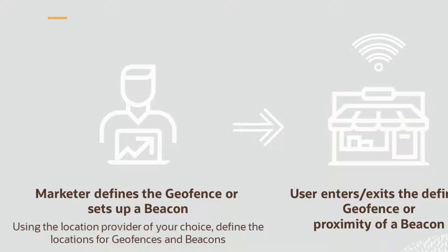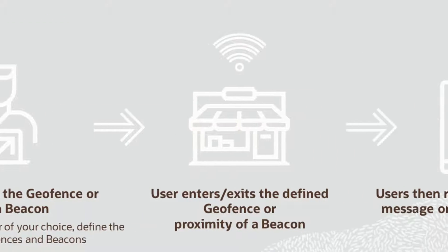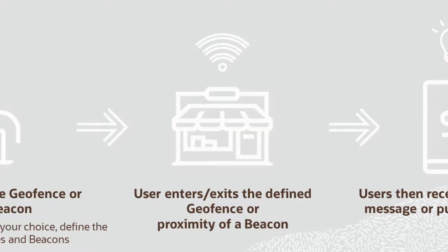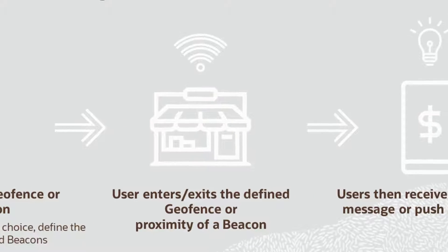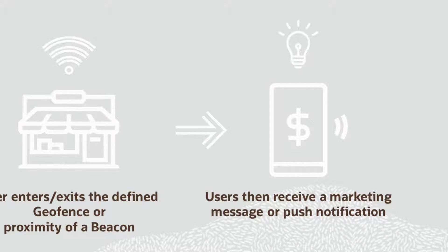For example, picture a fictitious jeans retailer named Durham Denim who wants to set up geofences in a store or shopping mall. Mobile apps detect when a user enters or exits a geofence — for example, a geographic area that covers a Durham Denim store. Marketers can use this location event to trigger a marketing message that is sent to shoppers in the vicinity of the store.